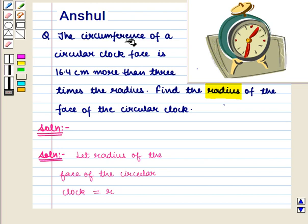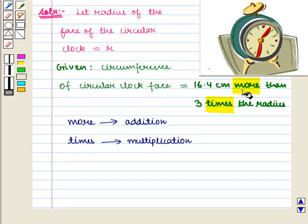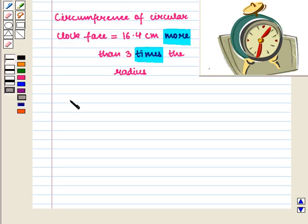Here we are given that the circumference of the circular clock face is 16.4 cm more than 3 times the radius. Now, more is the key word for addition and times is the key word for multiplication. So circumference will be equal